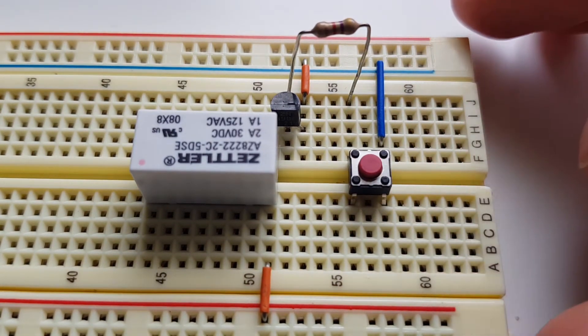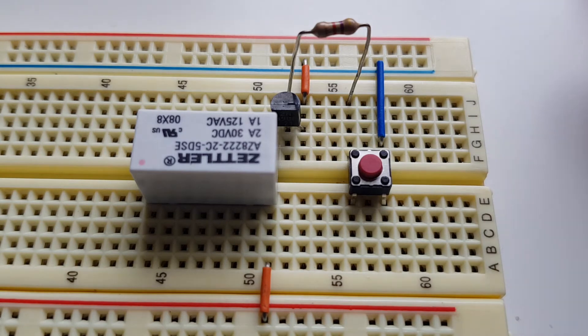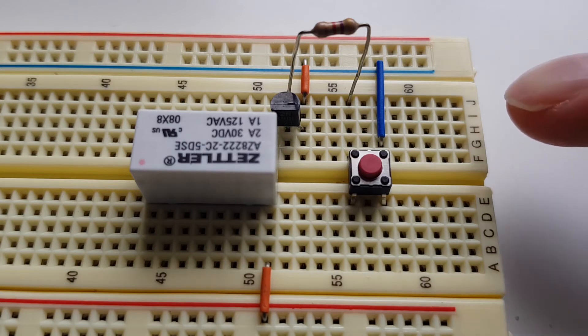Now normally when you build a circuit like this, you're supposed to install a small diode around the relay coil so you don't blow out your transistor. When the current through the coil is interrupted, it generates a voltage spike.